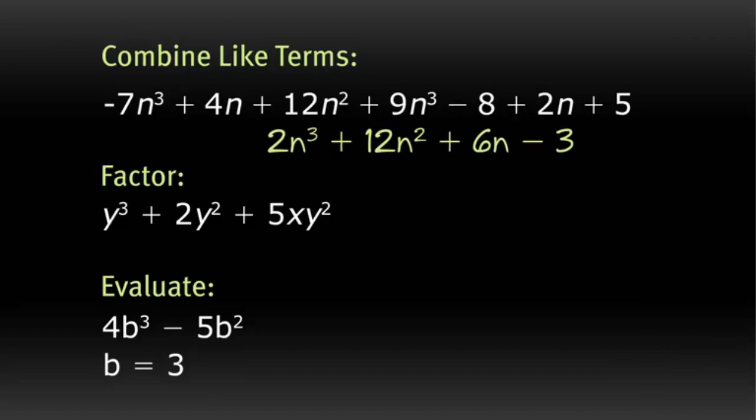For the second question, you see that there's a y squared common to all three parts. So you can take out a y squared, and then that would be multiplied by y plus 2 plus 5x.